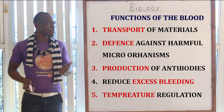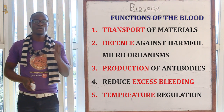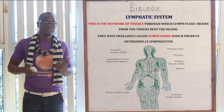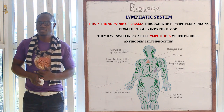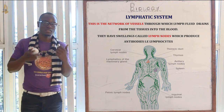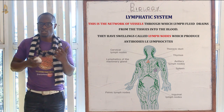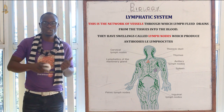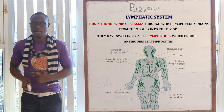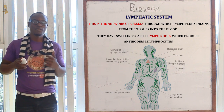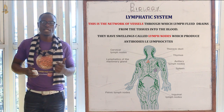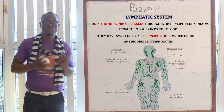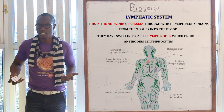Now let's look at the lymphatic system. The lymphatic system is mainly the network of vessels through which lymph drains from the tissues into the blood. It has different swellings called lymph nodes, which mainly produce different antibodies.